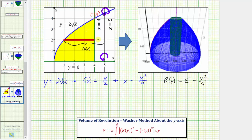This gives us the distance from the axis of rotation to the y-axis minus the distance from the y-axis to the blue function, which gives us big R of y. Little r of y is much easier — it's the inner radius. Notice how the distance from this region to x equals five is a constant, always equal to one unit, so little r of y equals one.